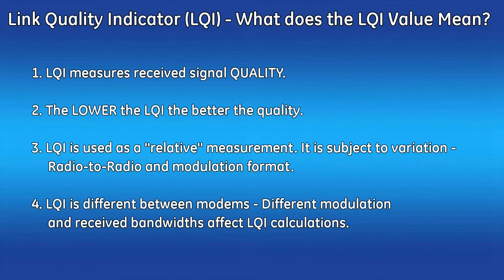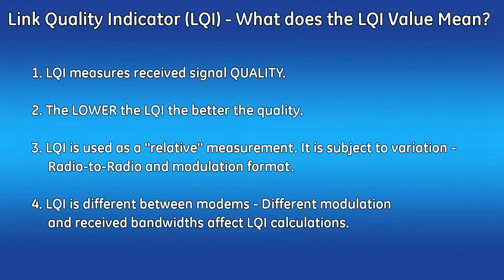LQI is a metric of the quality of the received signal. Unlike RSSI, which simply measures signal strength and does not care about signal quality, LQI doesn't care about signal strength — it is concerned with the correctness of the signal, meaning how easily the received signal can be correctly demodulated. In general, the lower the LQI, the better the quality. LQI should be used as a relative measurement, as precision is fairly loose and subject to variation from radio to radio and modulation format.